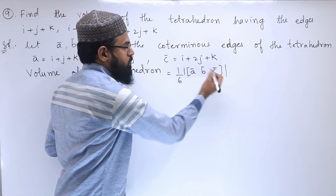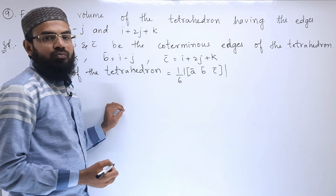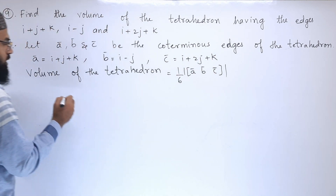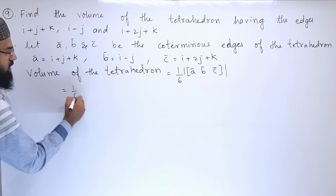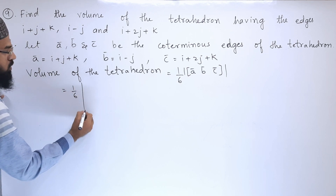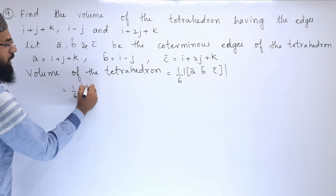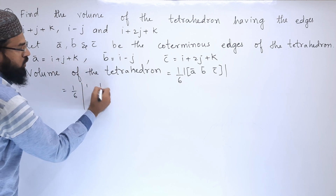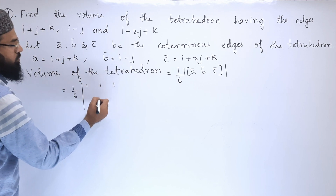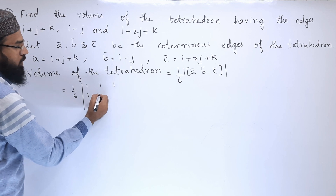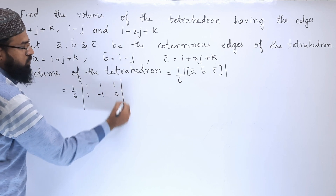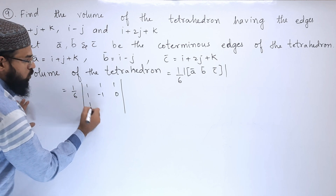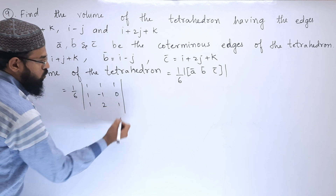To find the scalar triple product, we compute the determinant. So we write 1/6 times the determinant with rows: [1, 1, 1], [1, -1, 0], [1, 2, 1].